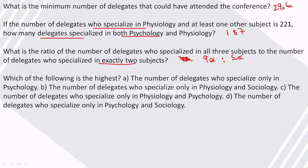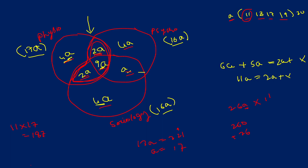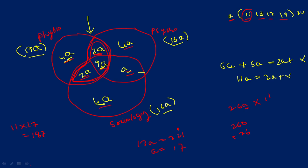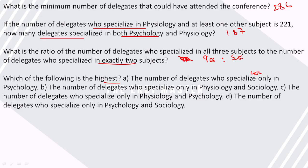Which is higher: the number of delegates who specialized only in psychology, which is 4a, or the number who specialized only in physiology and sociology, which is 2a? So 4a is the highest.